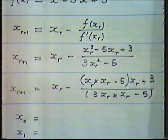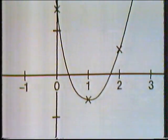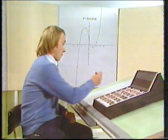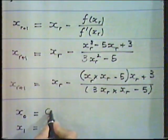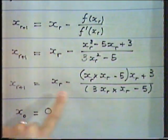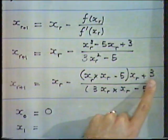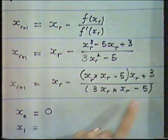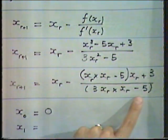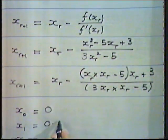Now we're all ready to go. Which root shall we go for? Let's try for the root near 0, and for an initial starting value, we can take x_0 equal to 0. We don't need the calculator at this point because the only non-zero terms are the 3 and minus 5. With the minus sign, we're left with 3/5, that's 0.6. So x_1 is just 0.6.